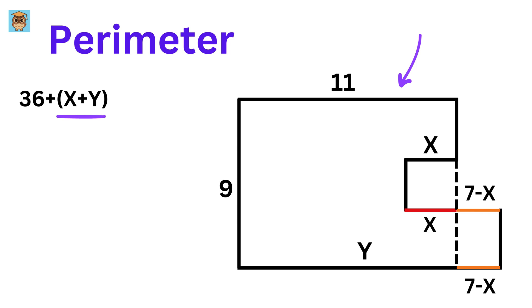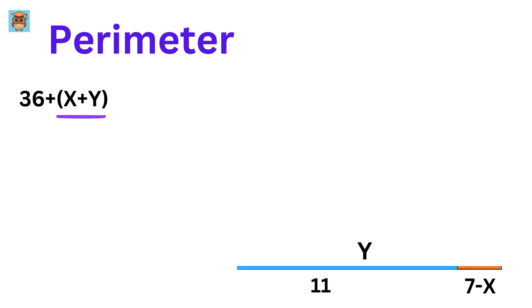Now, this side has a length of 11 units, so this will also be equal to 11. Thus, this entire length will be equal to 11 plus 7 minus X, or 18 minus X, but it is also equal to Y. So, we get 18 minus X equals Y, and if we take X this side, we have X plus Y equals 18.